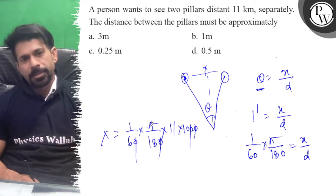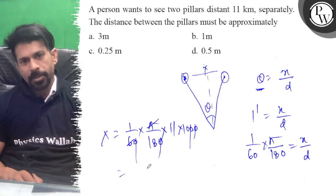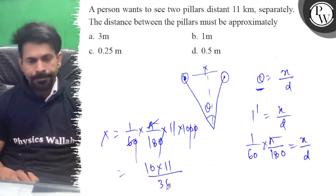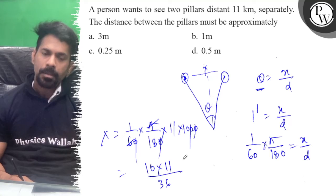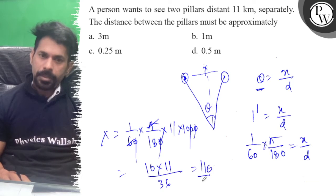And if we cancel, one zero goes, so this becomes 110 into 11 upon 36. So this becomes 110 upon 36.